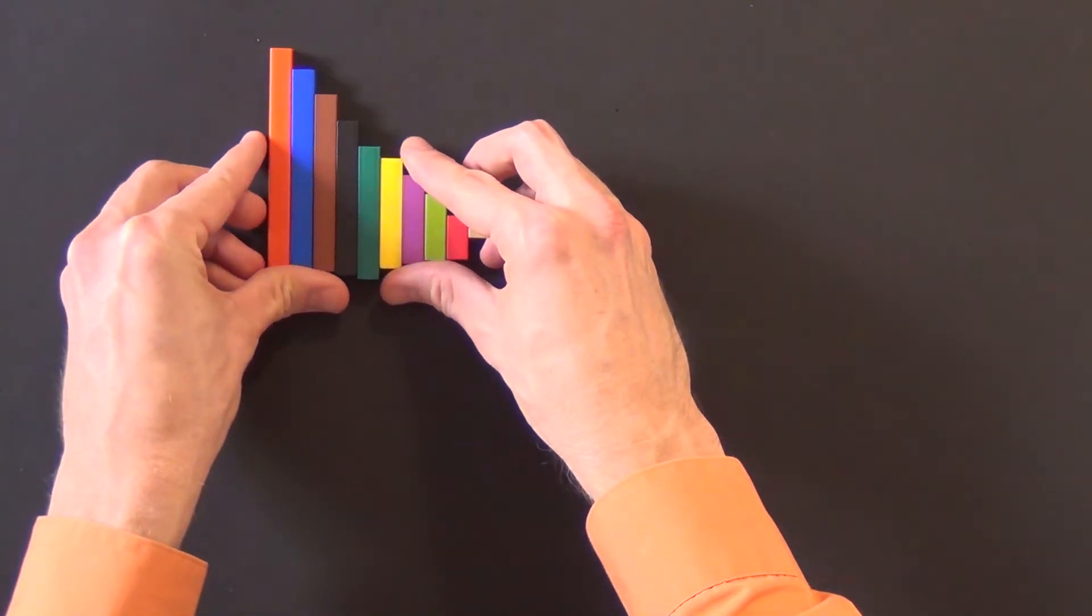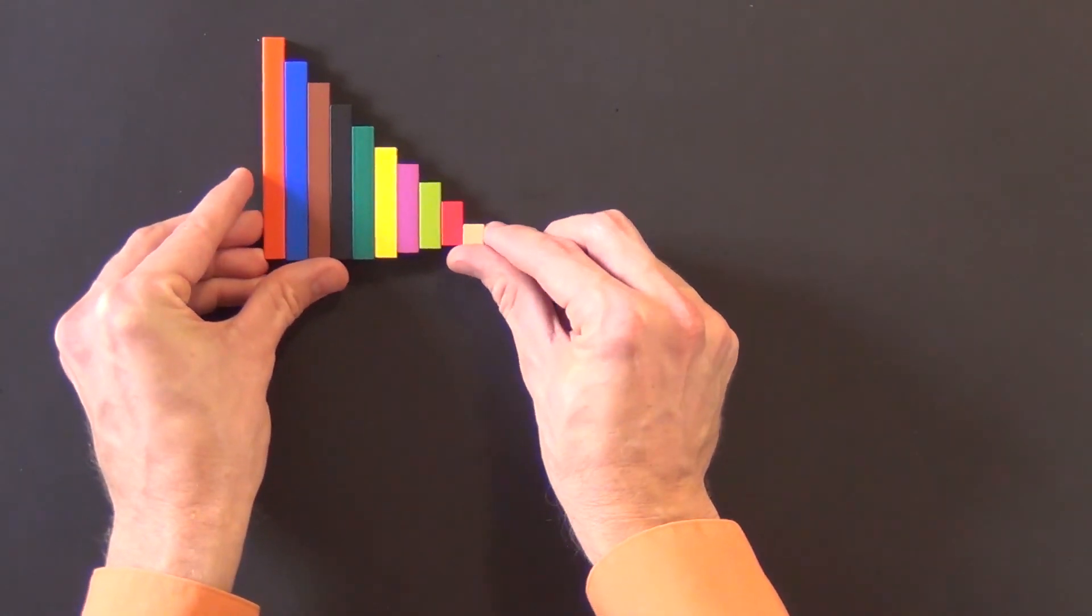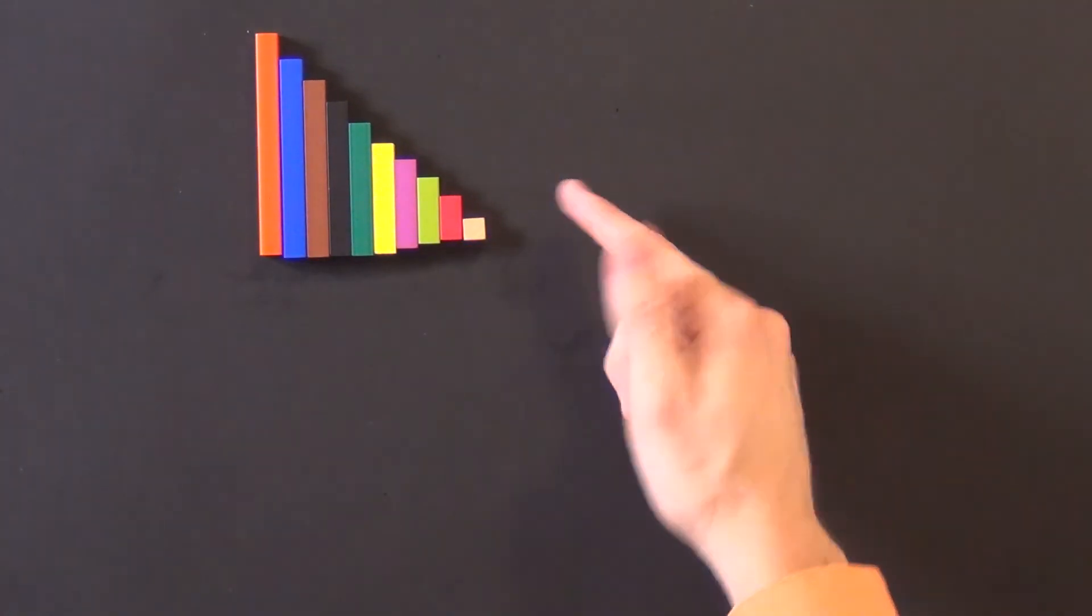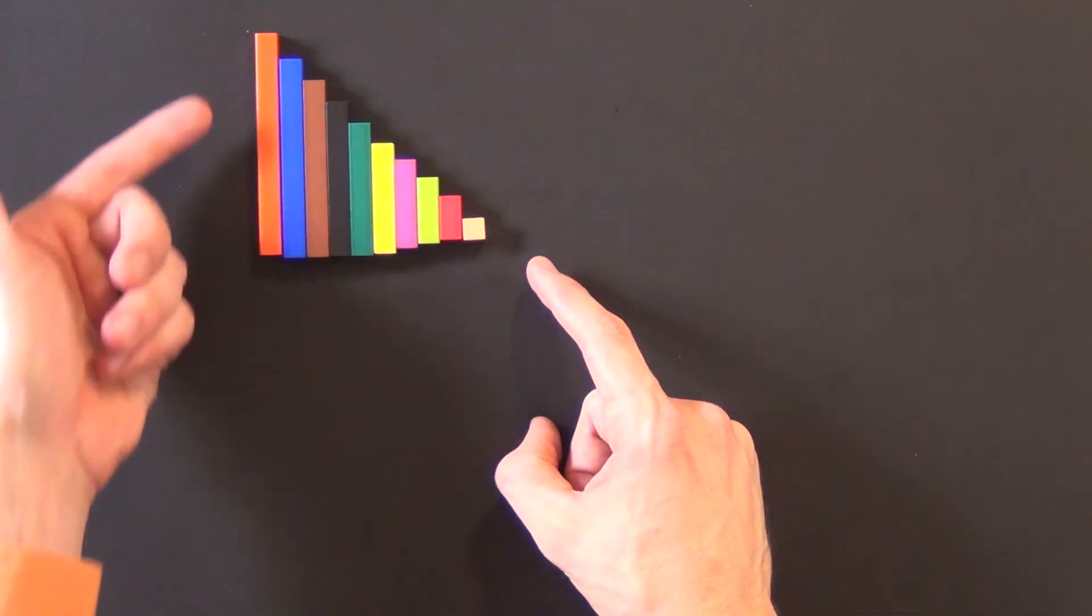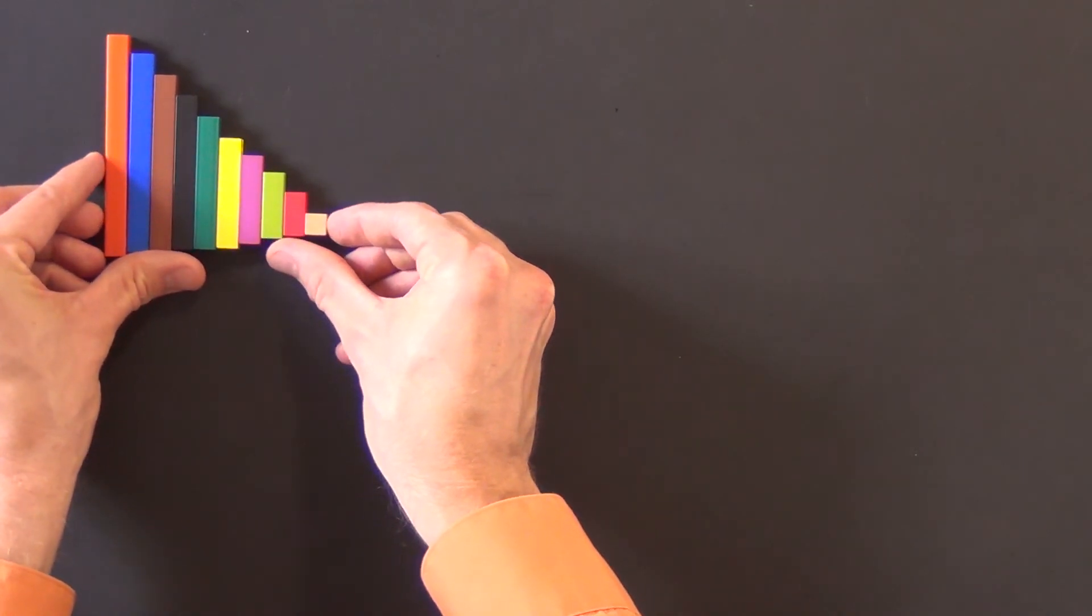When students are using colored rods, they need to understand they're dealing with a linear model and that each rod is a different length. The white has a length of one and the orange has a length of ten. I'm going to go ahead and leave this on screen so that you can see it while you go through the video with me.